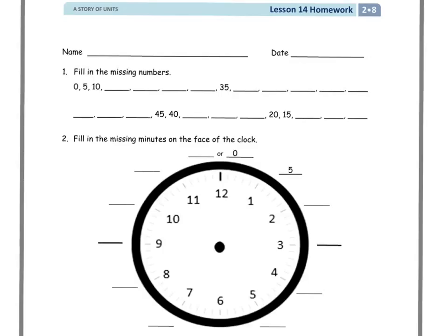The directions for number 1 say fill in the missing numbers. So what we're doing for the first row, and these are two separate rows, that'll probably help you out. We're counting up and we're doing it by minutes. And this is what we talked about in yesterday's lesson.